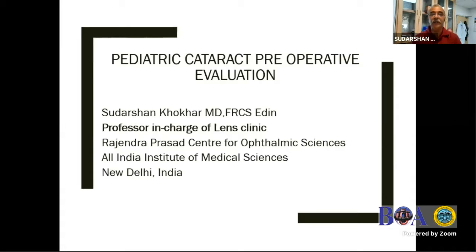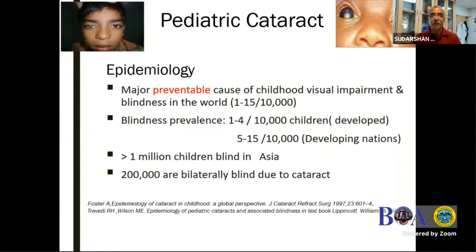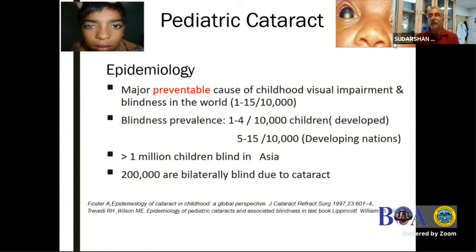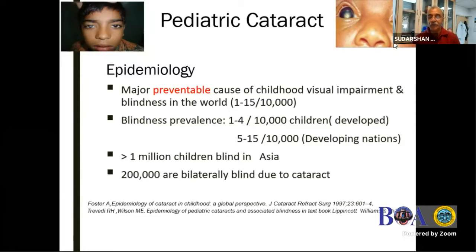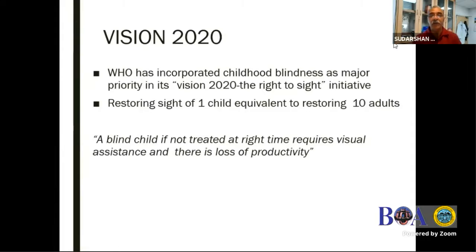This topic is called preoperative evaluation. Why are we talking about this? It's a big issue. If you see the number of patients, 1 to 15 in 10,000 live births will have a pediatric cataract, and a pediatric cataract is totally curable. If you pick it up early, operate the patient, put an implant and glasses - but if you leave them alone, they're going to be blind, that is for sure. The WHO says operating a blind child is better than treating an adult because helping one child equals around 10 adults.